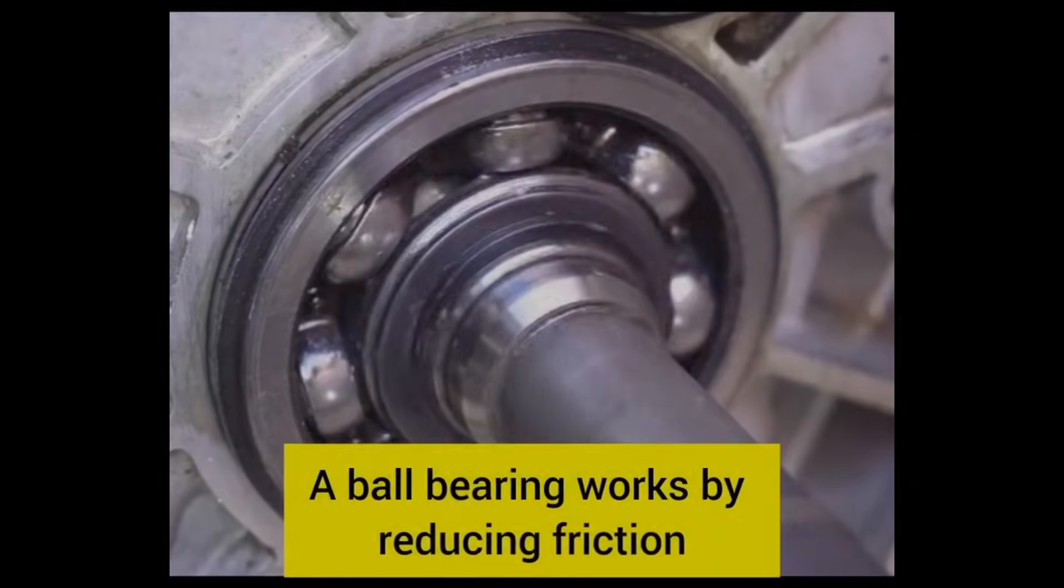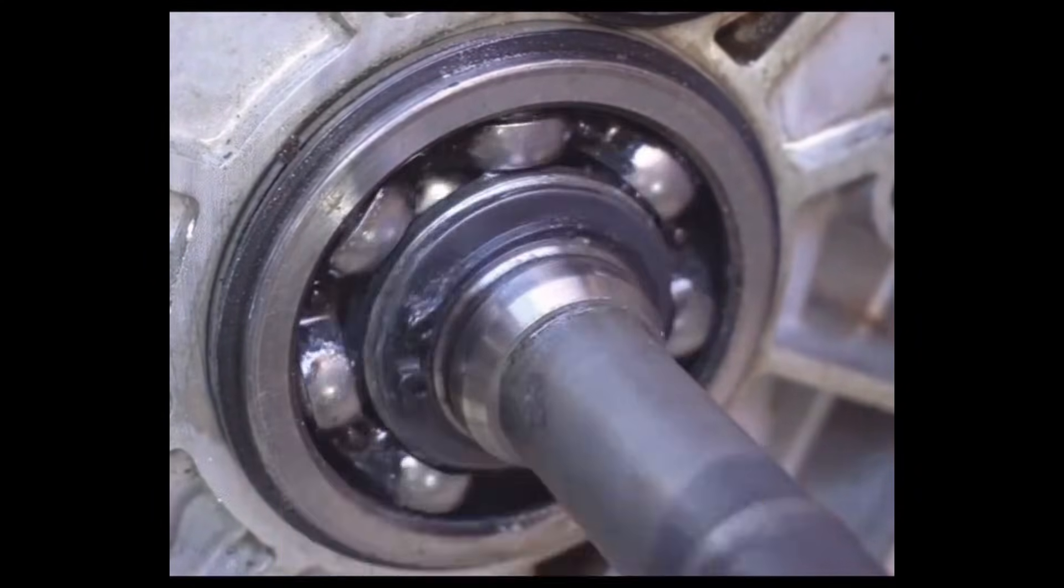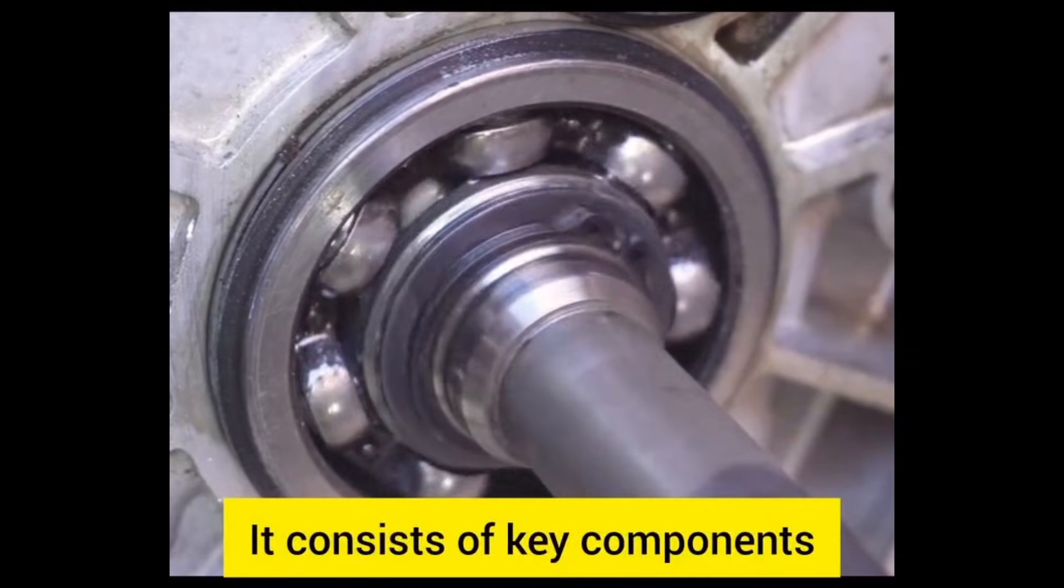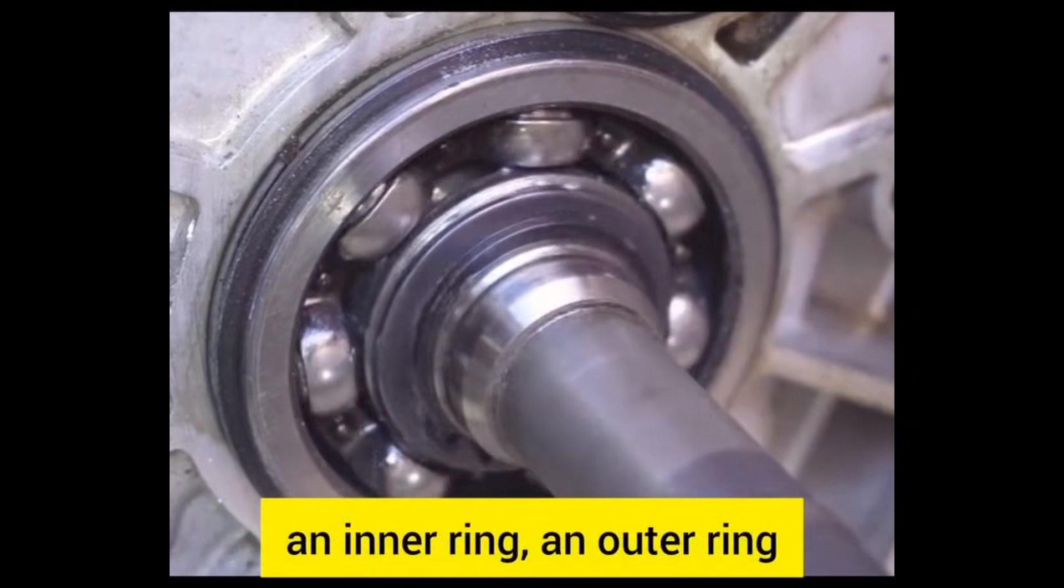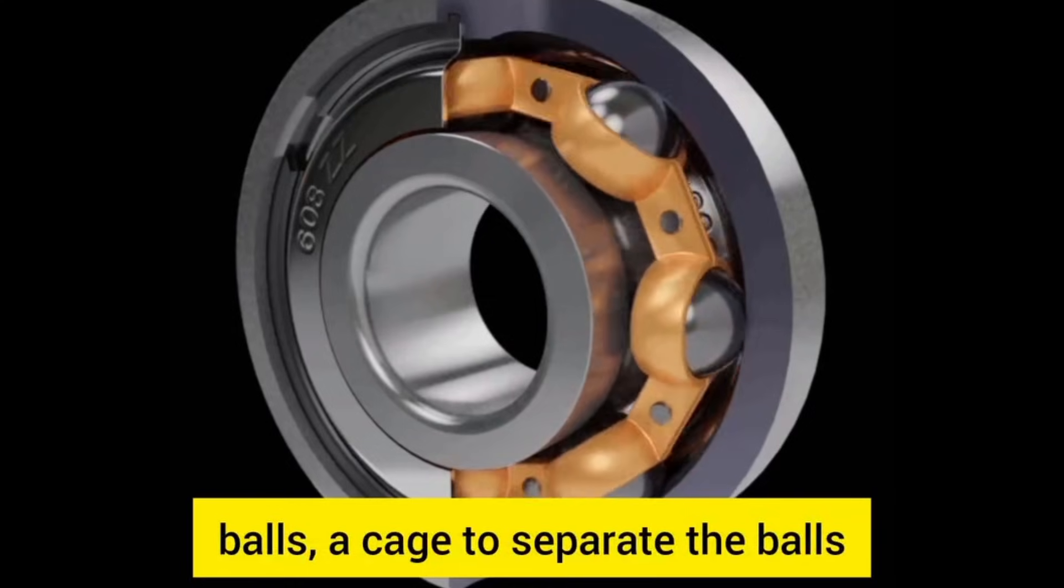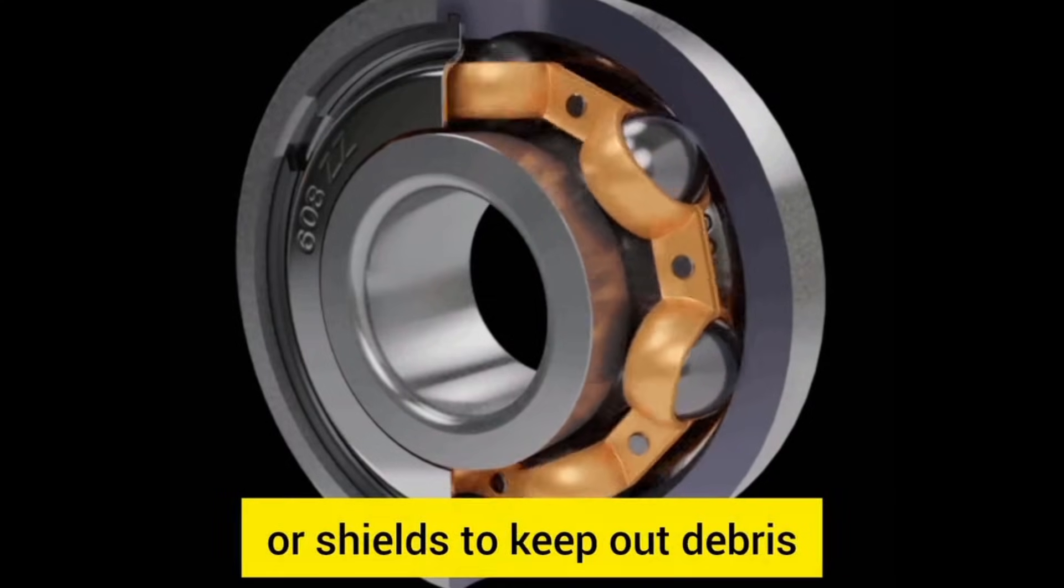A ball bearing works by reducing friction between moving parts, allowing smooth rotation. It consists of key components: an inner ring, an outer ring, balls, a cage to separate the balls, and sometimes seals or shields to keep out debris.